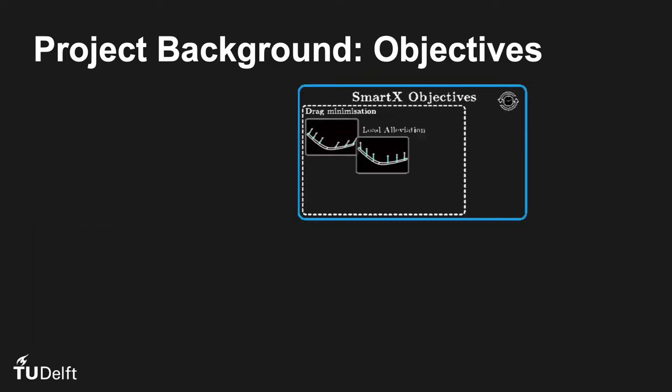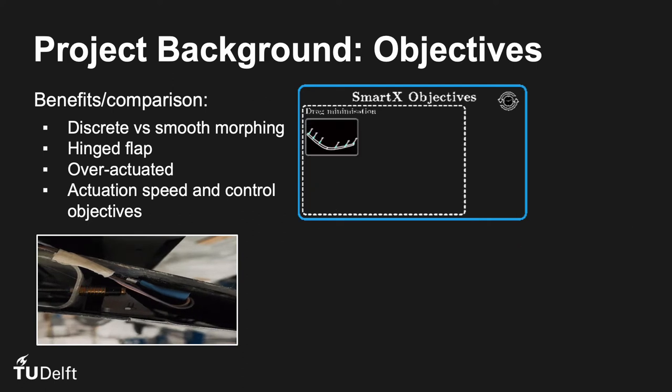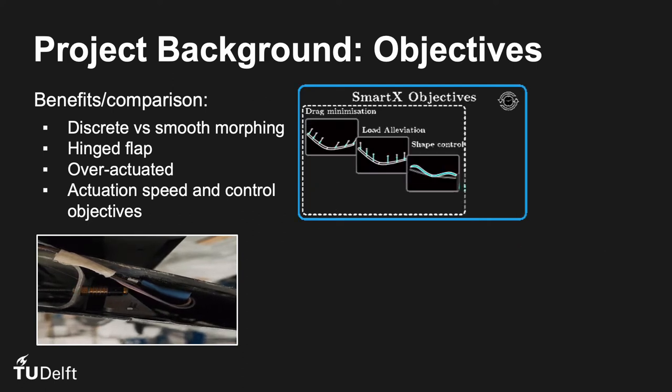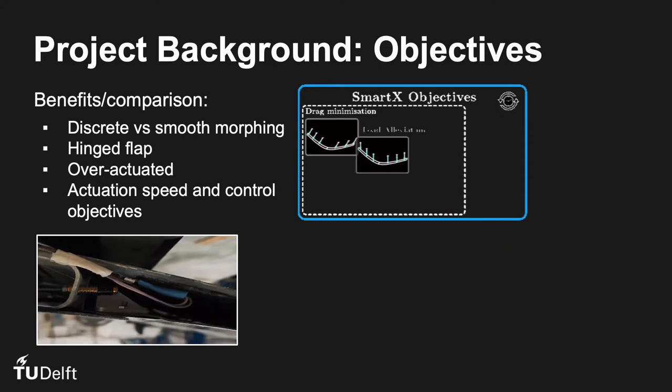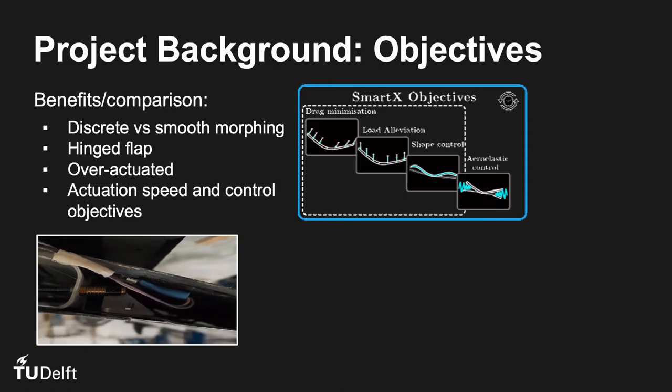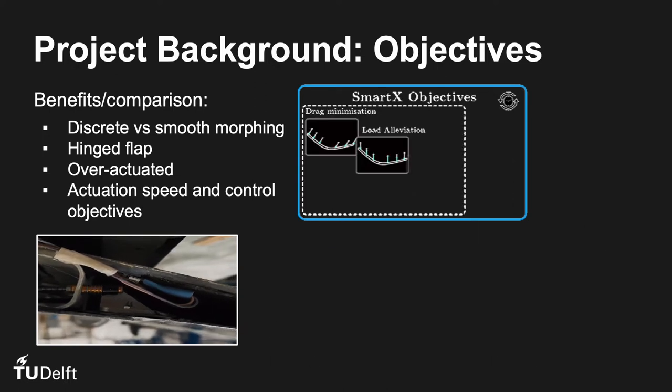However, the assessment revealed some of the shortcomings attributed to the complexity of the system and actuation speed, which impacted the possible scope of objectives. This invited the investigation into the benefits of simple hinged but distributed flaps. It was hypothesized that a faster actuation mechanism could help achieve more control objectives than the SmartX Alpha. Hence, the SmartX Neo project was initiated.